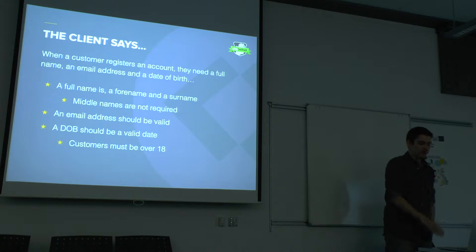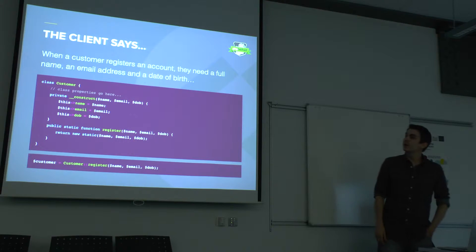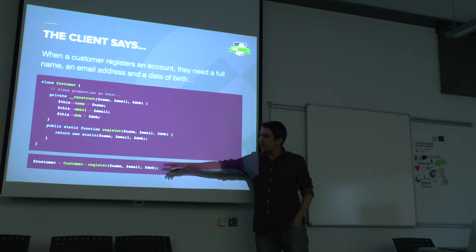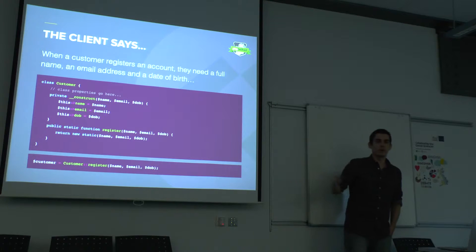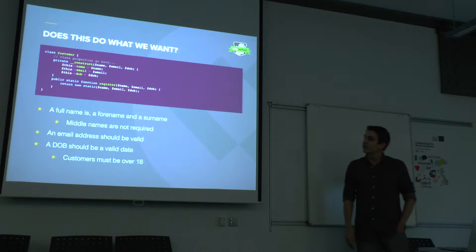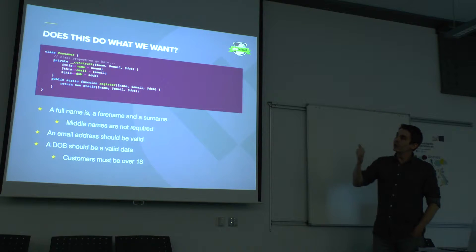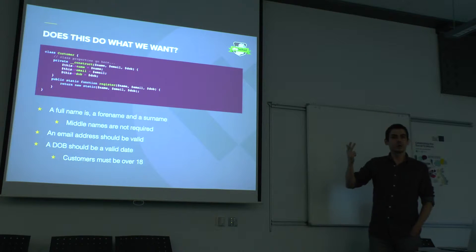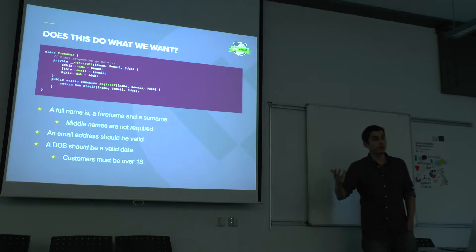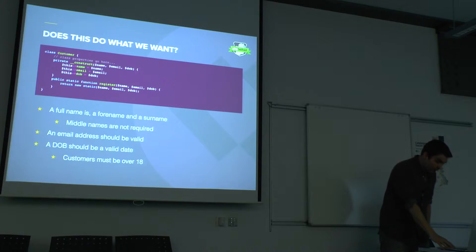How can we make sure that those things exist when a customer is registered in our system? We can create a customer class, and to construct it you need a name, an email address and a date of birth. I'm just creating a little static function to do that, so when you're writing code it's actually really readable — you know exactly what you're doing. Instead of 'new customer' or whatever it is, I'm actually registering a customer. But does this actually do what we want based on the rules? We know we need three variables to create a customer, but we don't really know what those three variables are, and we're not enforcing any of the rules that a full name consists of a forename and surname, or that a date of birth has to be valid and customers are over 18. That's where value objects come in.